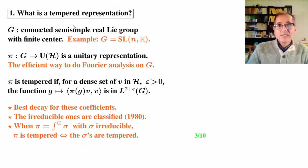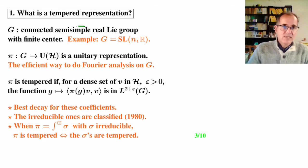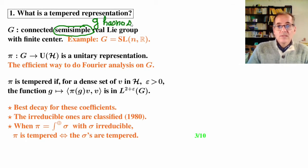Let us begin with some definitions. In this talk, G will be a connected semi-simple real Lie group with finite center. Semi-simple just means that the Lie algebra is semi-simple: G has no solvable ideals.